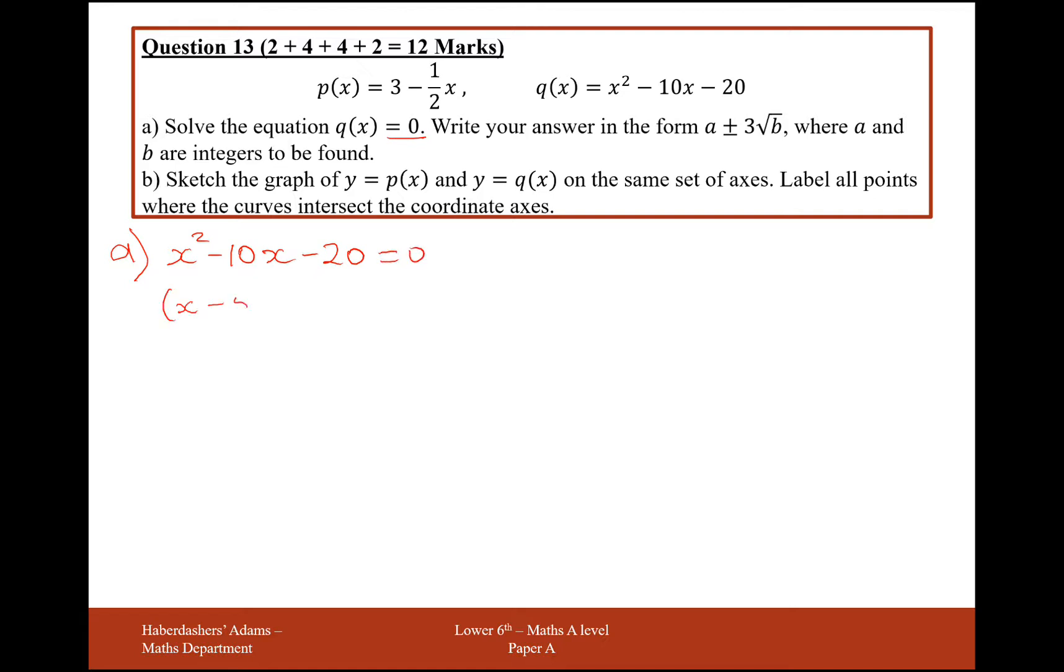So do this whichever way you want, it doesn't look like it factorizes, otherwise it wouldn't be in this complicated form. So I'm going to complete the square, so I need to then take away 25 and then take away the 20 from above, so that will equal zero, so it's going to be x minus 5 squared, add the 45 over to the other side.